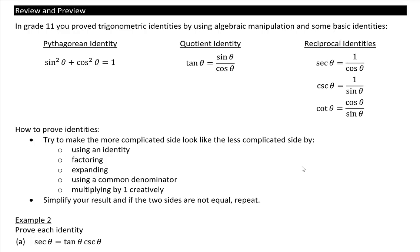Welcome to a review and preview of trig identities. In grade 11 you proved the following trig identities. The Pythagorean identity, which is sin²θ plus cos²θ equals 1. This is also equal to cos²θ equals 1 minus sin²θ if you isolate for cos², or sin²θ is equal to 1 minus cos²θ if you isolate for sin².